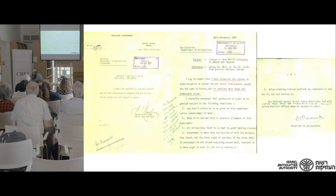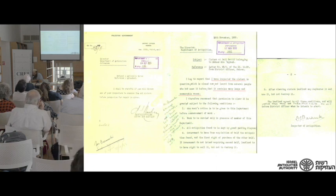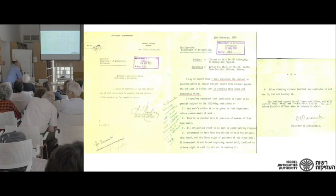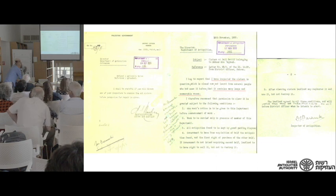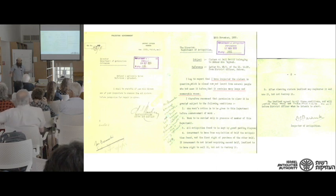Following the reports, we have a formal report to inspect the cistern by Dmitri Baramki. He gets to Beit Natif and reports that he inspected the well and it contains many lamps and zoomorphic vases. Most important are the terms of the agreement: the work is to be done under inspection of a member of the Department of Antiquities, at the expense of the landowner, with a 50-50 agreement between the government and the landowner to share the antiquities.